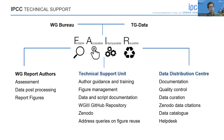To give you an idea, in the Working Group 3 AR6 report, we have around 320 figures.